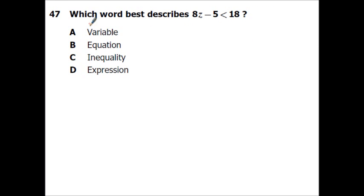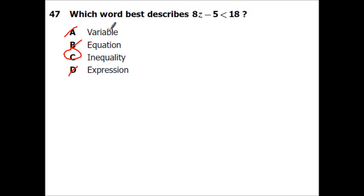Which word best describes '8Z minus 5 is less than 18'? A variable is a letter representing a number. An equation has an equal sign. An expression has no inequality or equal sign. This is an inequality because of the less-than symbol.